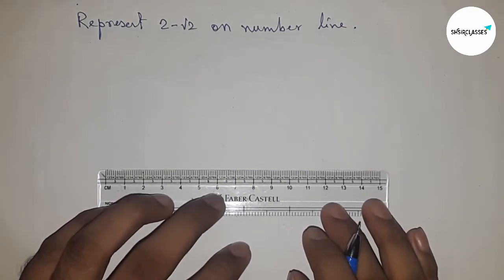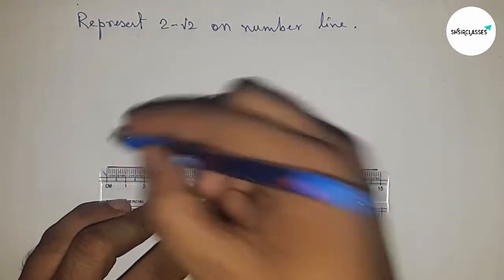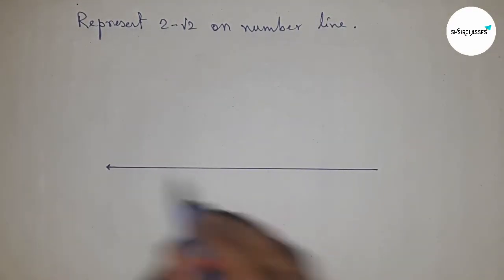First of all, drawing a line of any length here and marking the ends with arrows. It represents a number line. This is the starting number, zero.